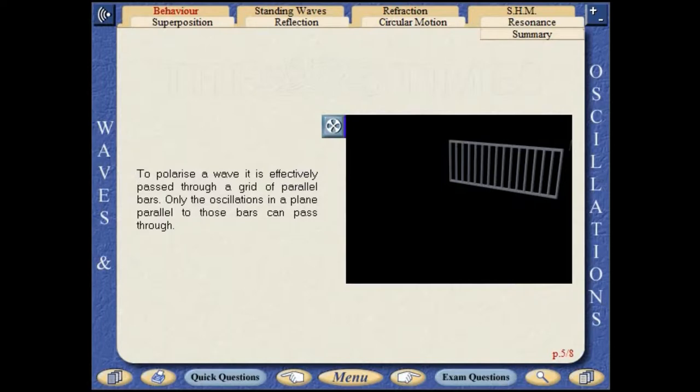In order to polarise a wave, it is effectively passed through a grid of parallel bars. Only the oscillations in a plane parallel to those bars can pass through. Polarisation is the process by which a wave's oscillations are made to occur in one plane only.